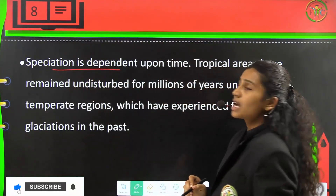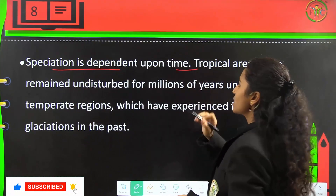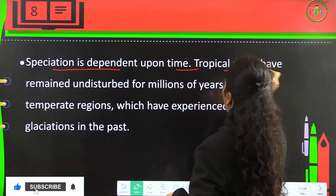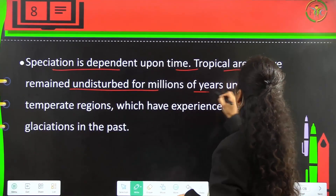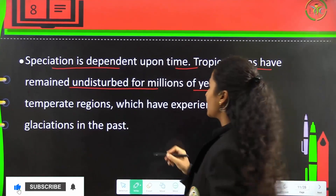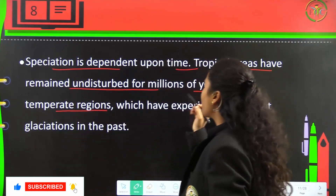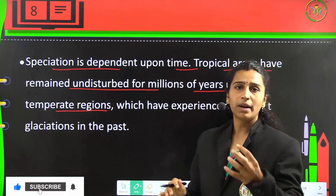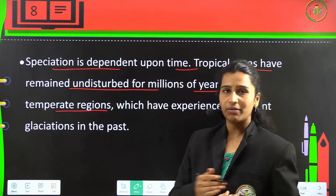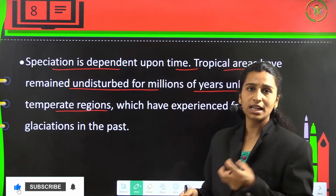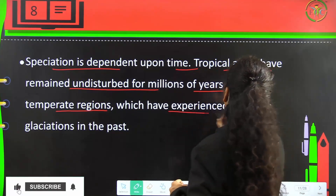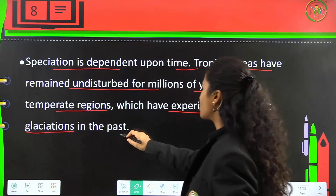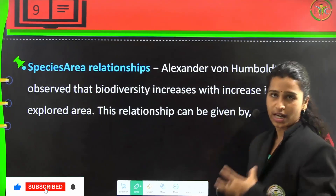Speciation is dependent upon time. Tropical areas have remained undisturbed for millions of years, unlike temperate regions. So speciation in tropic regions is undisturbed, but in temperate regions it gets disturbed frequently because of external environmental conditions, including frequent glaciations in the past.